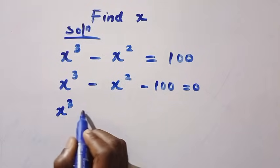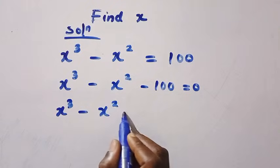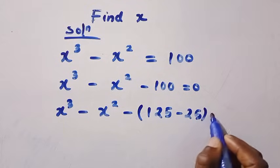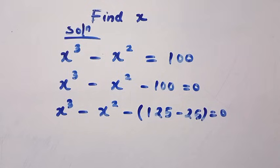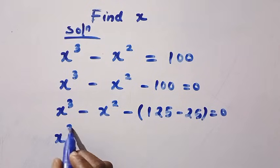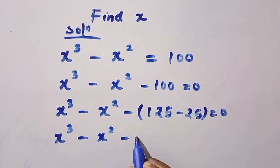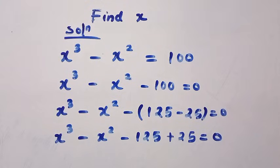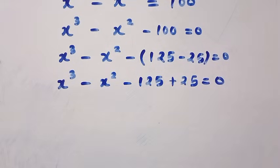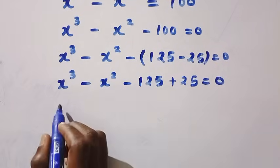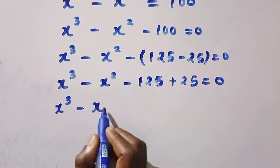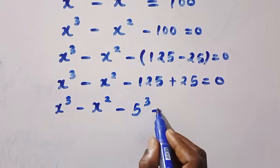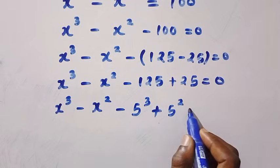The next step is to write 100 in a useful form. We have x cubed minus x squared, minus open bracket 125 minus 25, which gives us 100. Opening that bracket we have x cubed minus x squared minus 125 plus 25 equals 0. We then write 125 as 5 cubed and 25 as 5 squared: x cubed minus x squared minus 5 cubed plus 5 squared equals 0.